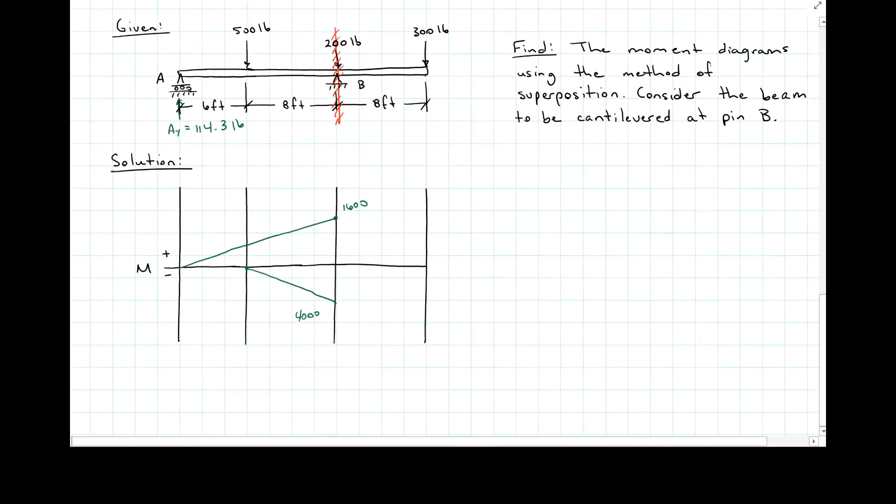And then I have my 300 on to the right of B. It is acting down, so it's going to cause a straight line down here. 300 times 8 is 2400. And there is my moment diagram with superposition for my point loads and my reaction at A.